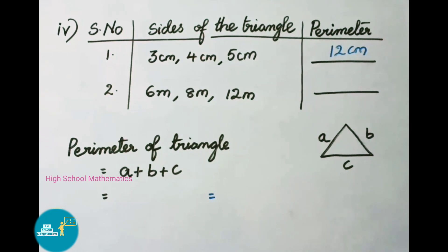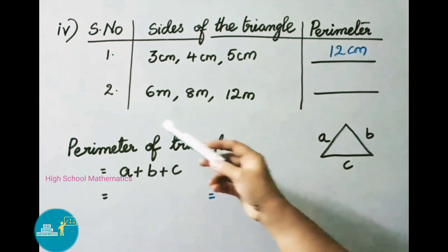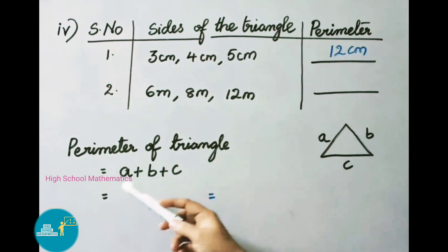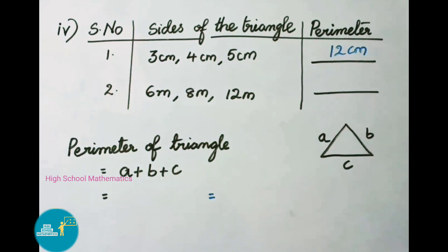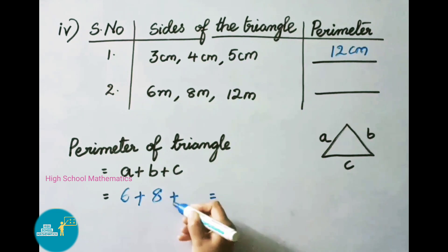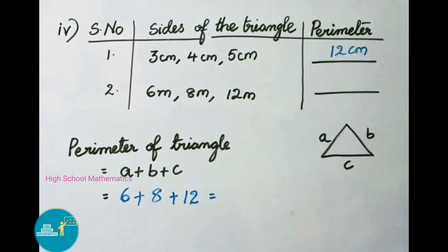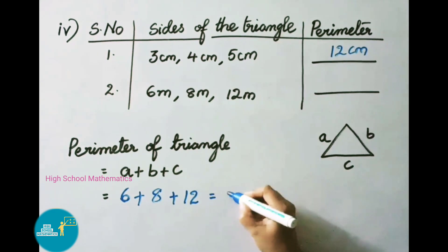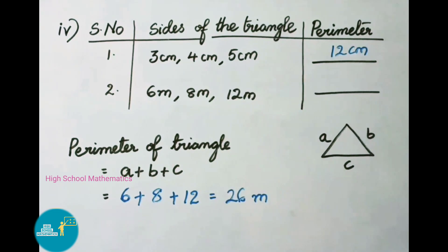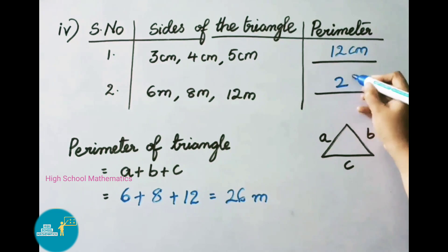For the second triangle, sides are 6 meters, 8 meters, and 12 meters. Perimeter = A + B + C = 6 + 8 + 12 = 26 meters. Therefore the perimeter of the second triangle is 26 meters.